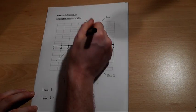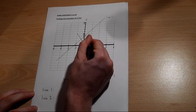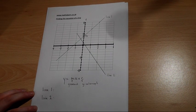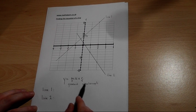So line one has a y-intercept of one, two, three, four. So line one has a y-intercept of plus four.